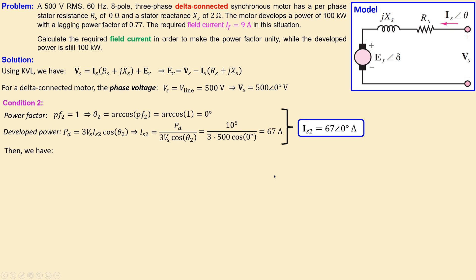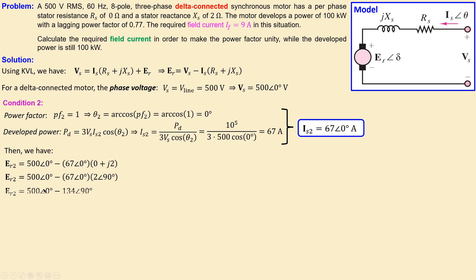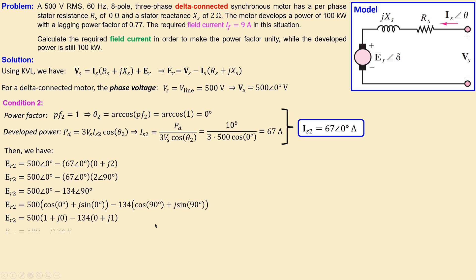Because the stator current changes while the resistance and reactance remain the same, the back EMF must also change. Substituting the new values and converting to polar representation following the same steps as condition one, we get 500 minus j134 volts. Converting to polar form, the magnitude is 517 volts with a torque angle of minus 15 degrees. This is the back EMF for the unity power factor condition.